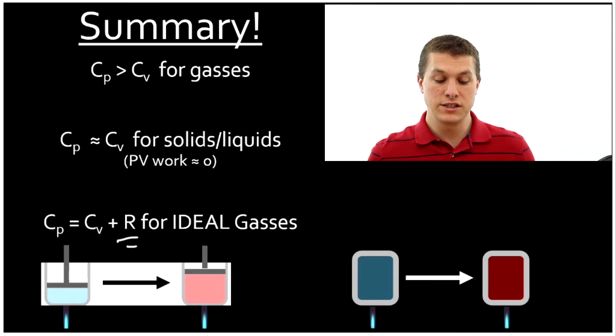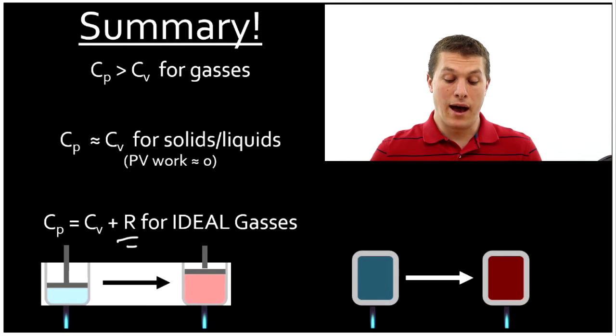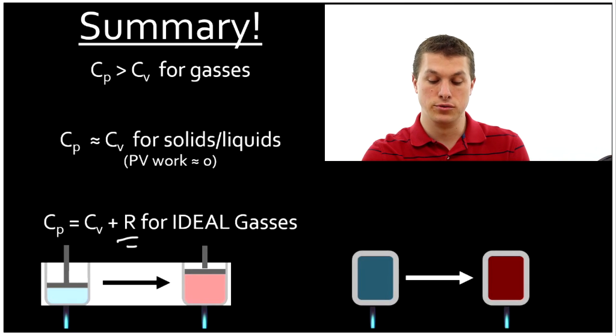So in this video what we've done is we've summarized the relationship between heat capacity at constant volume and constant pressure. Remember for gases these are different and heat capacity at constant pressure is larger. It can store more energy per temperature degree. Now CP and CV are the same for solids and liquids and finally you can add R to CV to get CP.